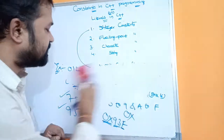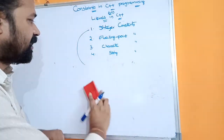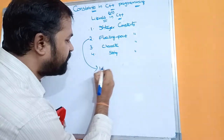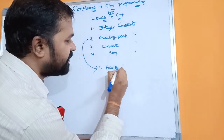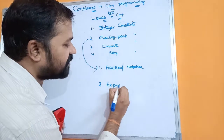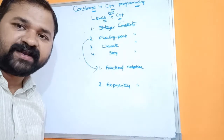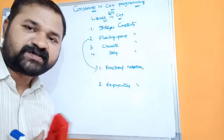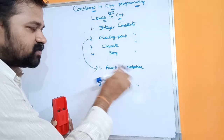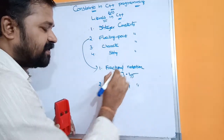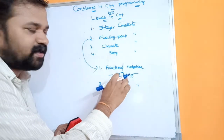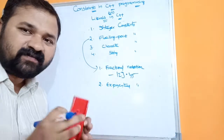Now let us look into the second type of constant, which is floating point constant. A floating point constant is mainly represented in two ways: fractional notation and exponential notation. Fractional notation means the number must contain a decimal point, with some digits before and after it. The number may be either positive or negative.